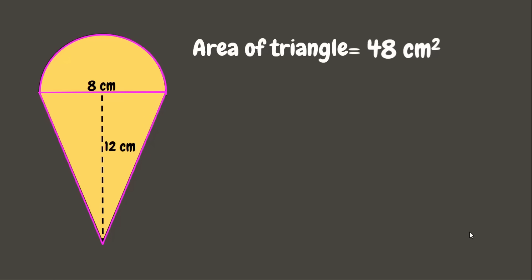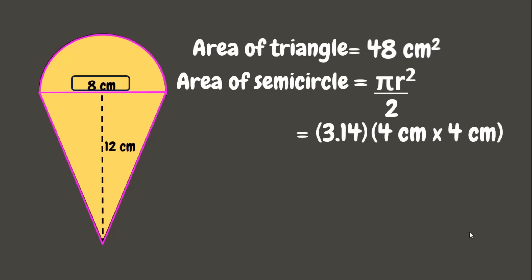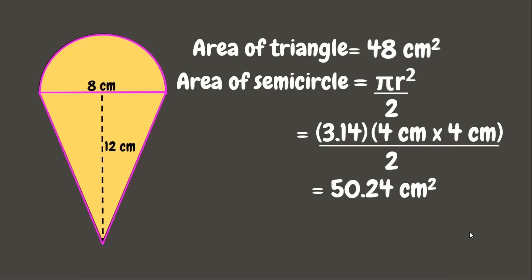Next, let's find the area of the semicircle. The formula is π r² divided by 2, using π = 3.14. The diameter is 8 centimeters, so the radius is 4 centimeters. We calculate 3.14 times 4² equals 3.14 times 16 equals 50.24 square centimeters, divided by 2 gives us 25.12 square centimeters — that is the area of the semicircle.